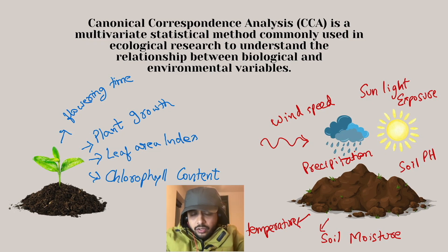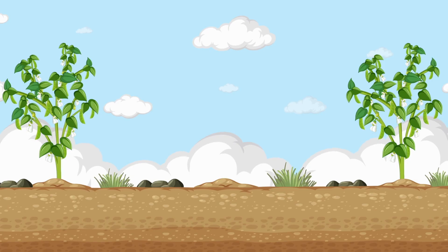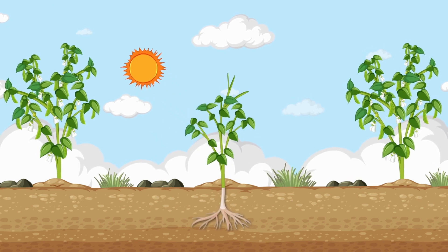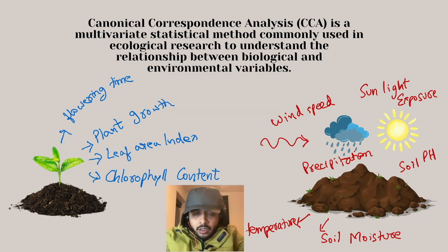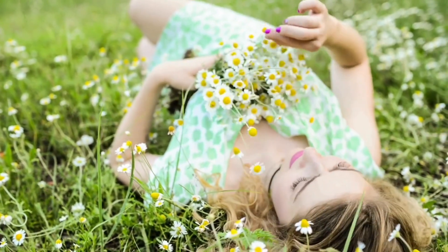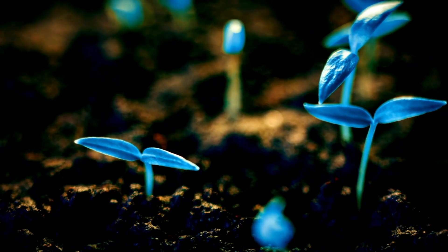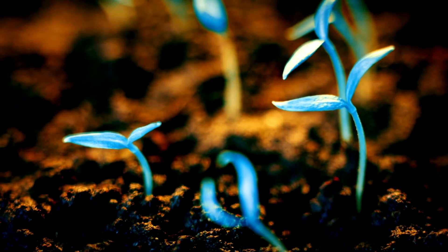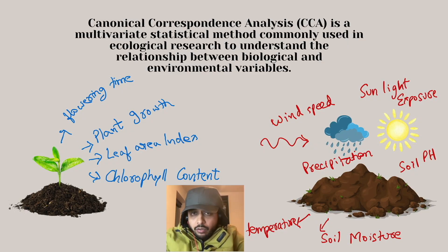In a specific ecosystem like a forest, the environmental variables such as soil moisture and soil temperature — highlighted in red on the right-hand side — affect the plant growth-related variables highlighted in blue on the left-hand side. While we can examine these relationships through simple pair-by-pair correlation — checking if flowering time correlates with wind speed, or plant growth with soil moisture — this method only provides a partial picture because it can only compare two variables at a time.